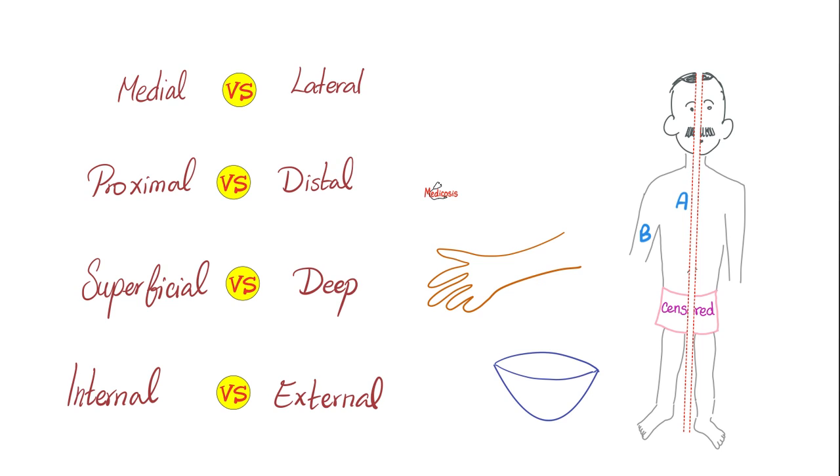Next is proximal versus distal. We use this for limbs or extremities mainly. Let me give you two points. Here is point C at my hip, and here is point D at my right foot. Which one is more proximal, aka closer to my trunk, to my core? C, of course. So C is more proximal. D is more distal. Away from my core. Away from the trunk.